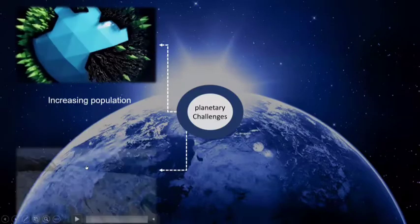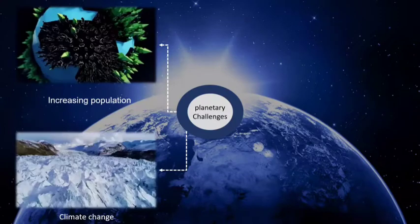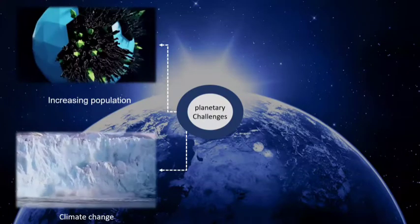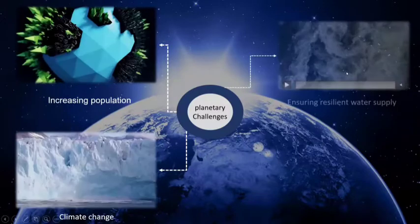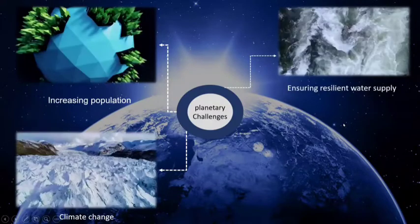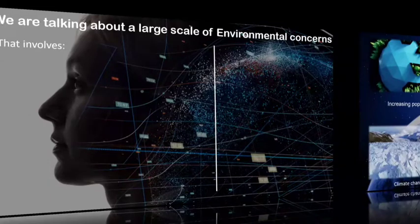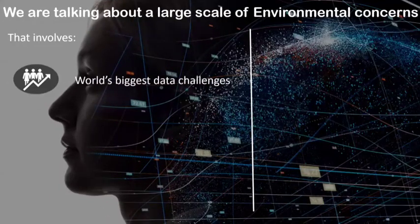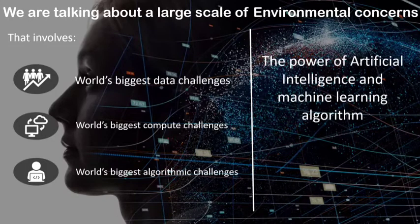Secondly, climate change. We are changing the climate in such a way that could have catastrophic impacts on our life. We have to figure out how we can mitigate and adapt to the rapidly changing climate and ensure resilience for all the species on this planet. We are talking about large-scale environmental concerns involving the world's biggest data challenges, compute challenges, and algorithmic challenges. With the help of artificial intelligence and machine learning algorithms, we believe we can do it.